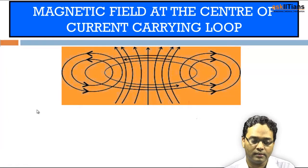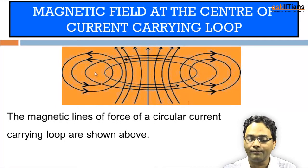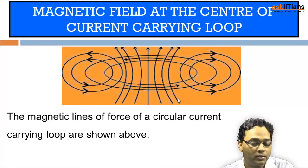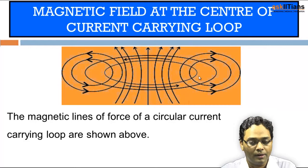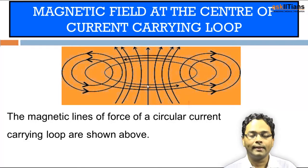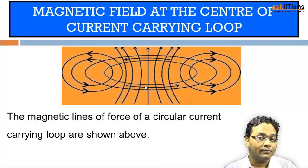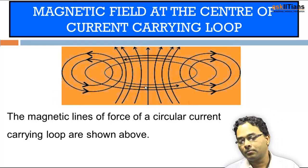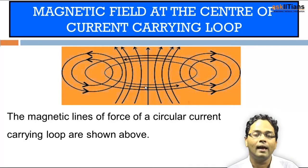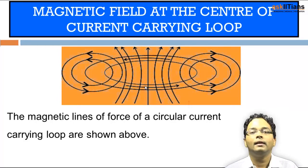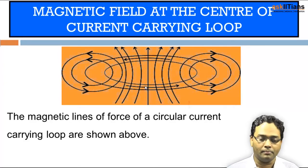Now for the directions — the current flow results in magnetic field lines. If the current flows in one direction, the magnetic field lines go accordingly. In the case of a magnetic field, the velocity of the charges, the force acting, and the magnetic field produced are all mutually perpendicular to each other — that is, force, velocity, and magnetic field are always perpendicular.